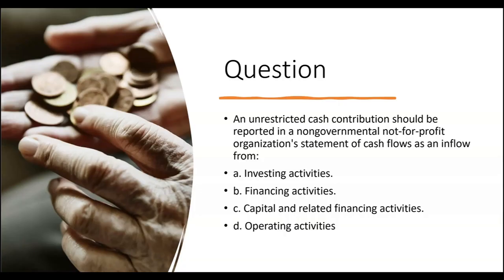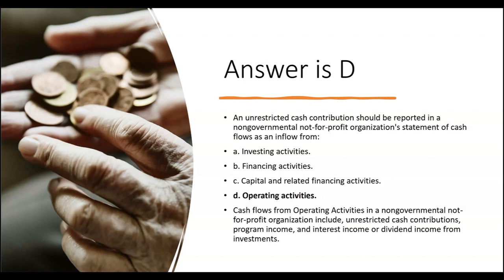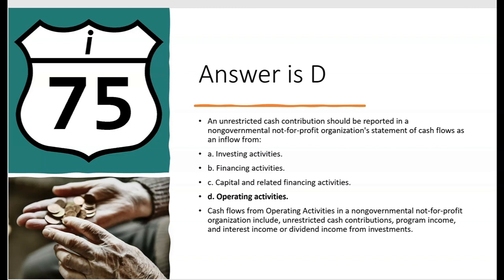An unrestricted cash contribution should be reported in a non-governmental not-for-profit organization's statement of cash flows as an inflow from what? Unrestricted cash contributions are always operating inflows — letter D is correct. And we're always trying to anticipate the next question: if it were a restricted cash contribution, then it would be a financing inflow. But in this question it's unrestricted, so the answer is D.